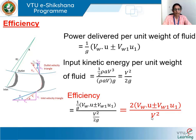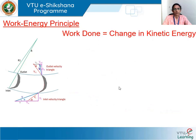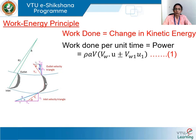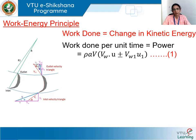This efficiency expression can be simplified further using the work-energy principle, which states that work done equals the change in kinetic energy. Work done per unit time is ρAV·(Vw·U ± Vw1·U1). The change in kinetic energy is the difference in kinetic energy at the inlet and the outlet. The kinetic energy at the inlet is ½ρAV³, where V is the absolute velocity of the jet at the inlet. Due to friction losses through the vane, the fluid exits with a different absolute velocity V1, which is the resultant of the relative velocity Vr1 and the vane velocity U1 at the outlet.